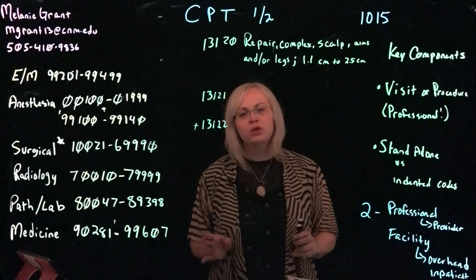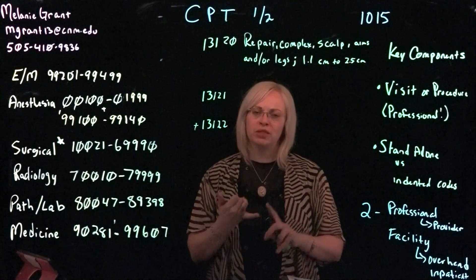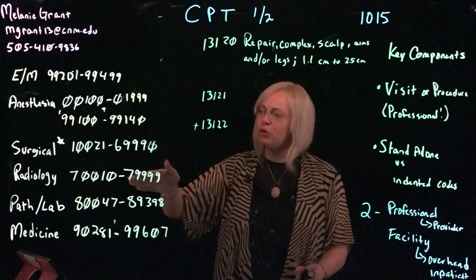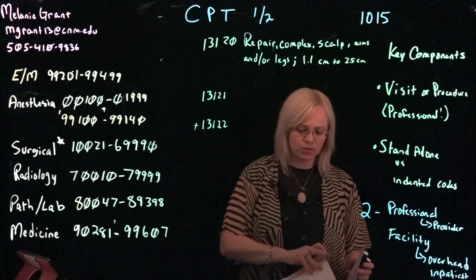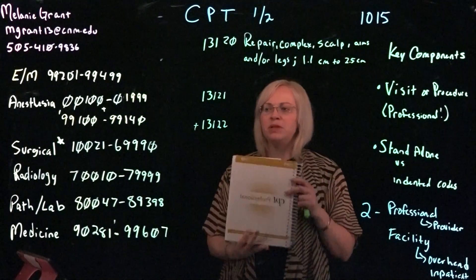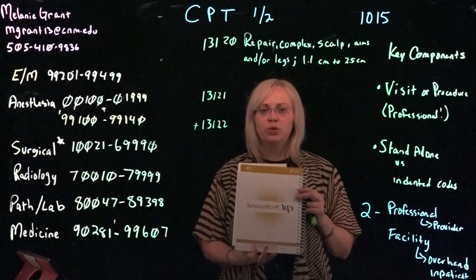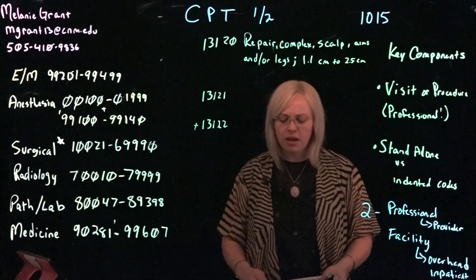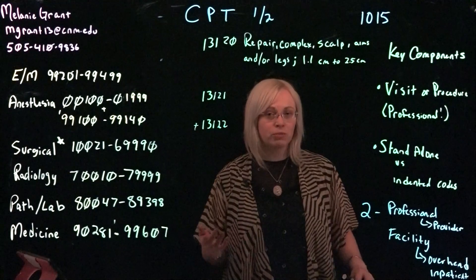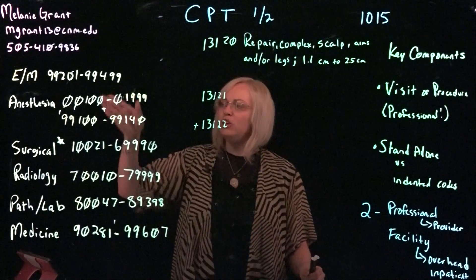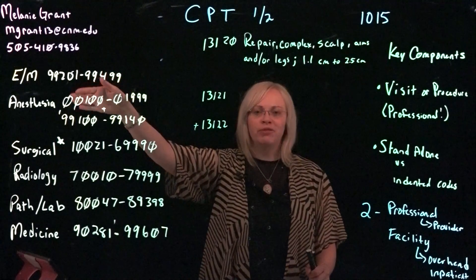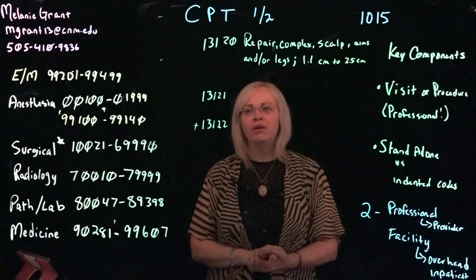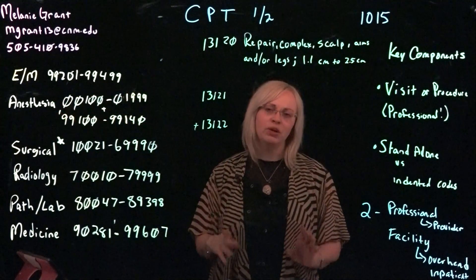When we abstract, we're looking to determine whether a procedure or service was done, or whether an office visit was done. You'll look at the organization of your CPT code book — we have the CPT professional edition from the AMA for 2019. If you have a different edition, that's fine, but keep in mind some page numbers or code descriptions may change. In your CPT book, it's organized with E&M always listed first, though in some editions it may be at the end, which is rare. E&Ms are your office visits or evaluation and management services.